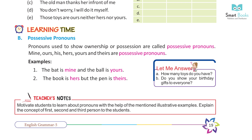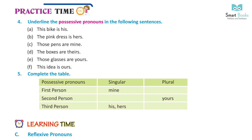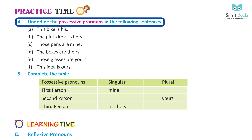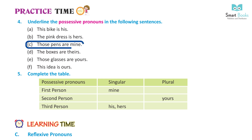Let me answer: A — how many toys do you have? B — do you show your birthday gifts to everyone? Teacher's note: motivate students to learn about pronouns with the help of illustrative examples. Explain the concept of first, second, and third person to the students. Practice time — underline the possessive pronouns in the following sentences.